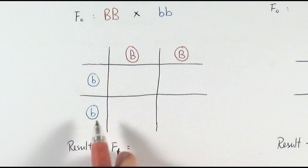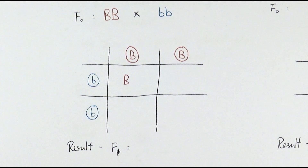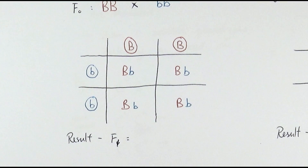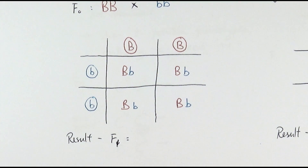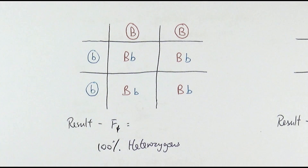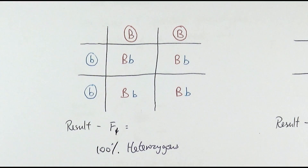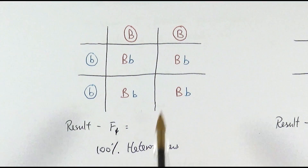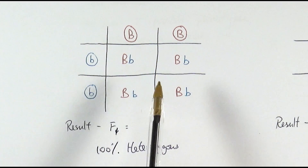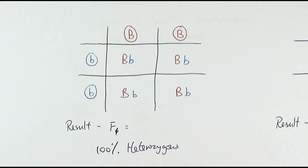From this cross, the only possible type of offspring we get would be heterozygous — so 100% heterozygous. It's worth remembering the percentage for different types of crosses, especially for homozygous and heterozygous crosses. There was an exam question last year where you had to deduce that if all offspring are 100% heterozygous, it must be a homozygous cross, meaning one parent is homozygous dominant and the other homozygous recessive.